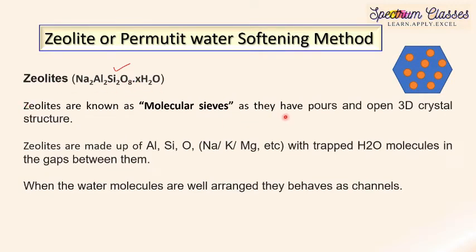Zeolites are known as molecular sieves as they have porous and open 3D crystal structures. As discussed, zeolites are made up of sodium, aluminum, silicon, and oxygen. Instead of sodium, one can also use potassium and magnesium. Zeolites also have trapped H₂O molecules in the gaps between them, forming a porous structure of aluminosilicate.